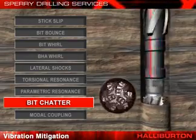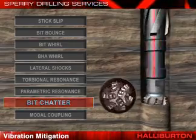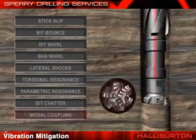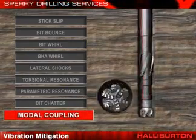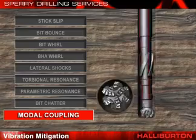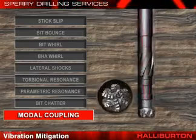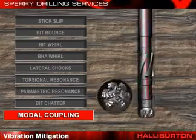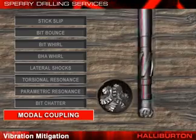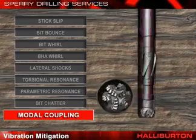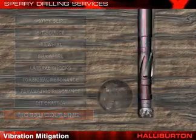The cutters ride up onto the ridge between previously cut grooves and then drop back into the groove. Modal coupling describes vibration occurring in all three modes — axial, torsional, and lateral — simultaneously. It creates axial and torsional oscillations and high lateral shocks along the BHA. The most extreme form of vibration, it usually results from failing to control one of the other vibration mechanisms.